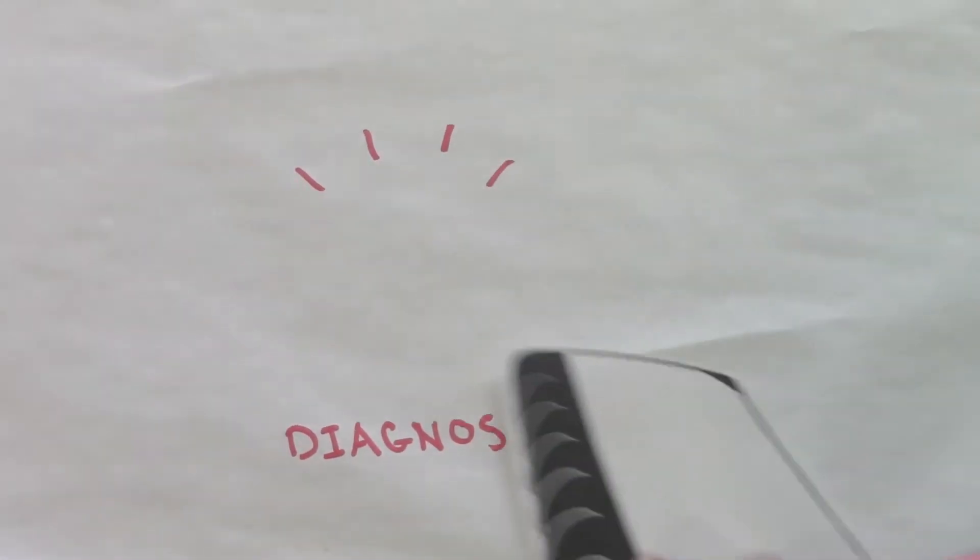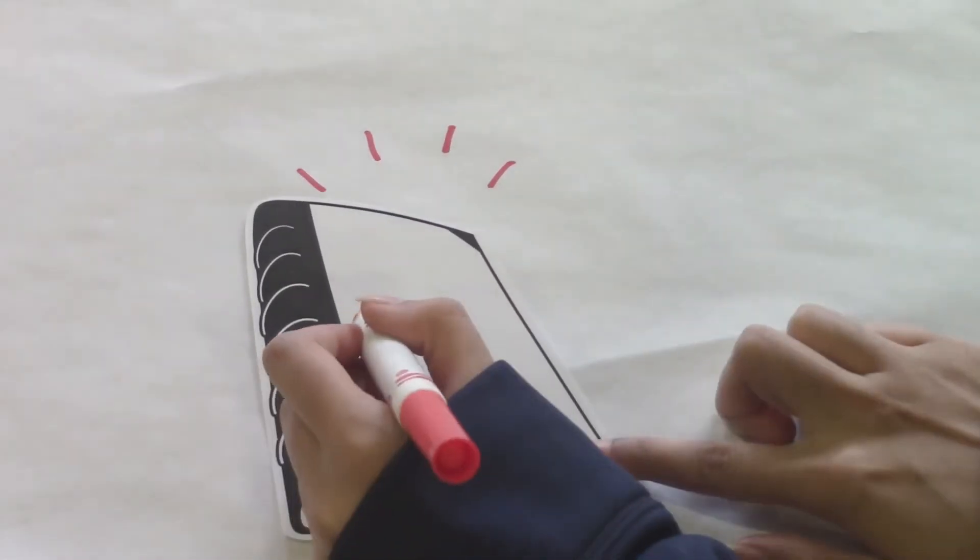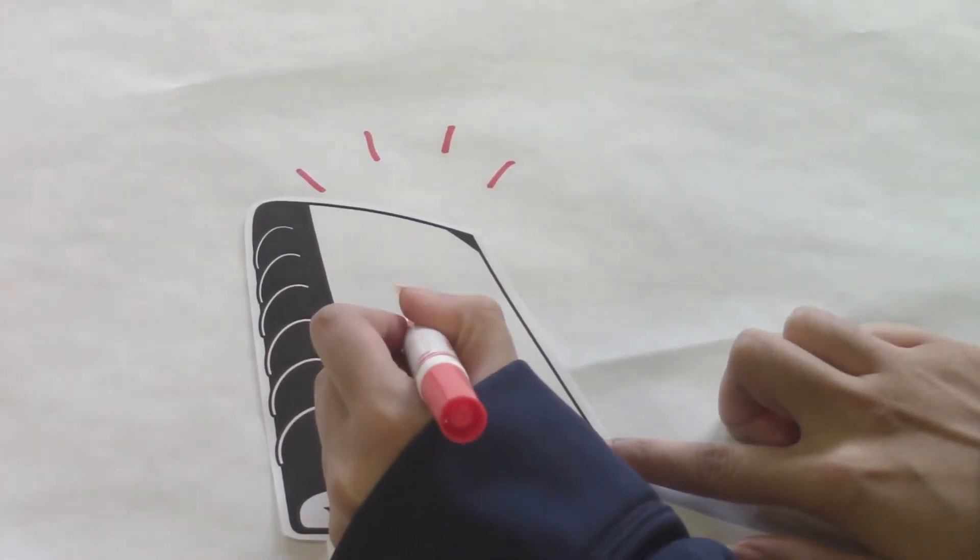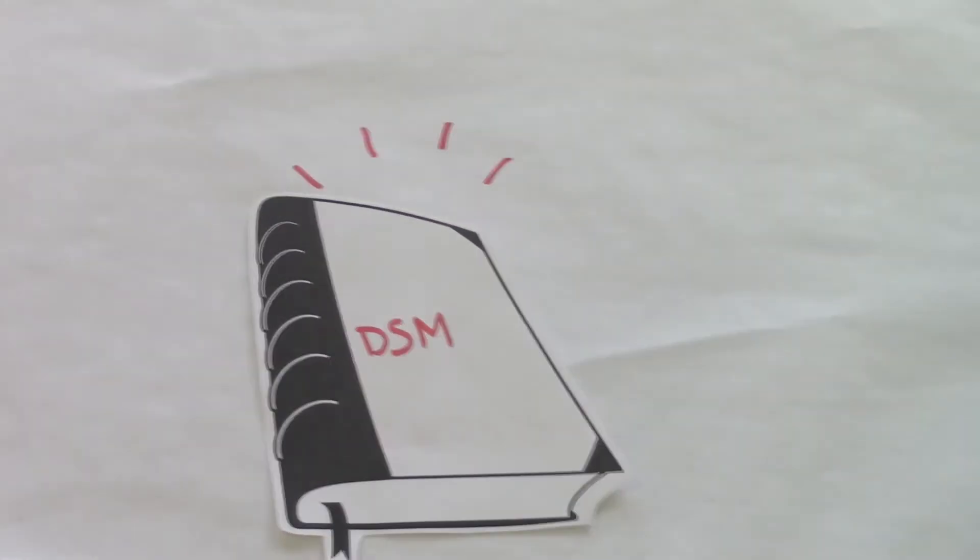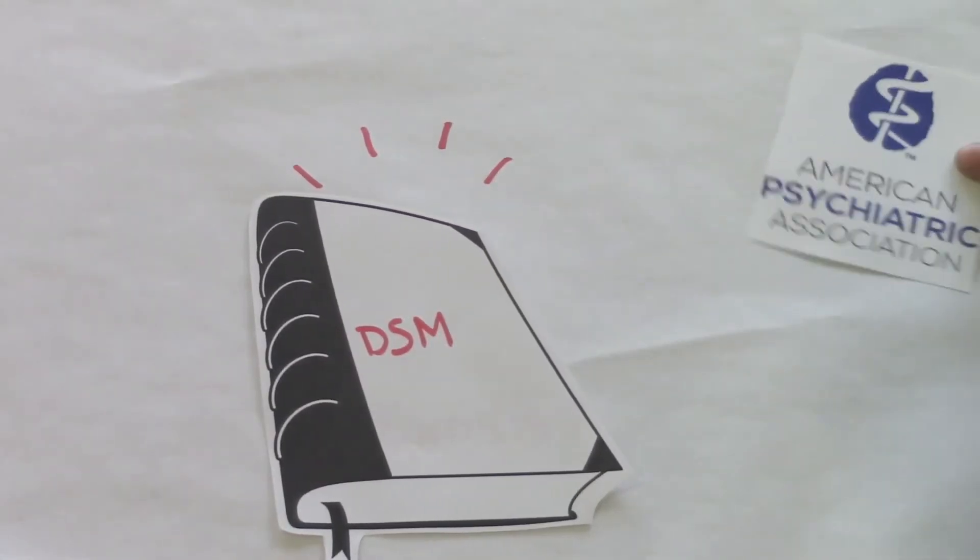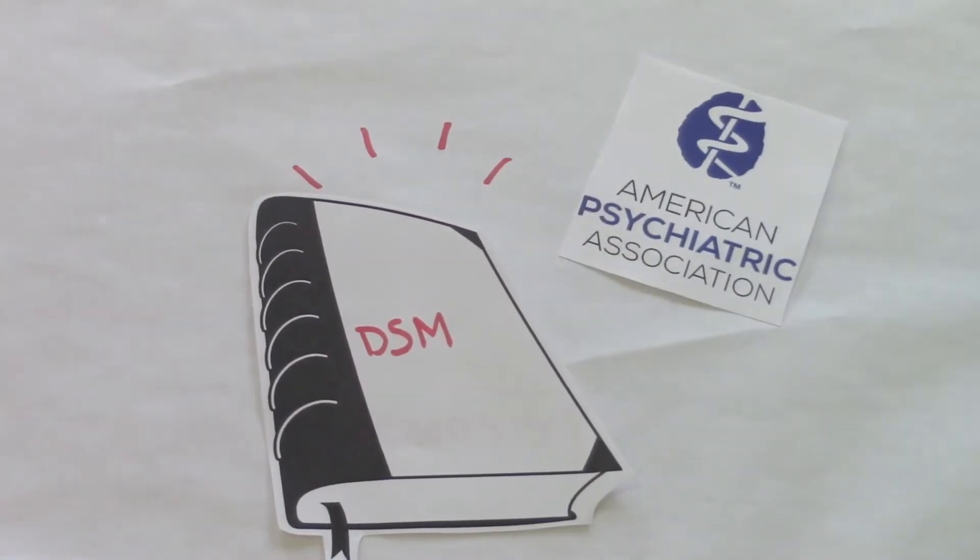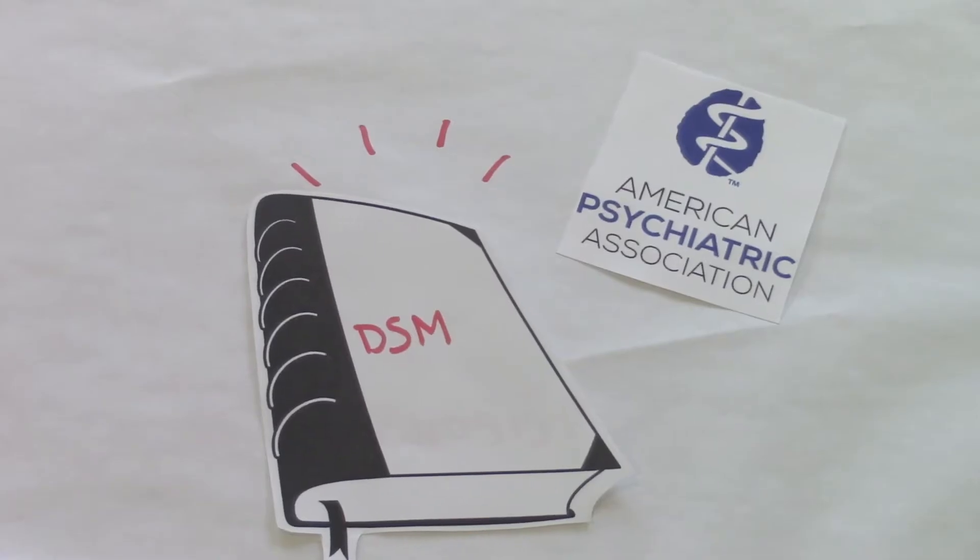That's where the Diagnostic and Statistical Manual of Mental Disorders, or the DSM, comes in. The DSM is a book published by the American Psychiatric Association which provides detailed criteria for the diagnosis of mental disorders.